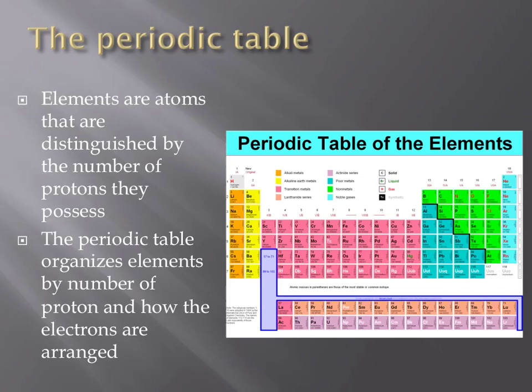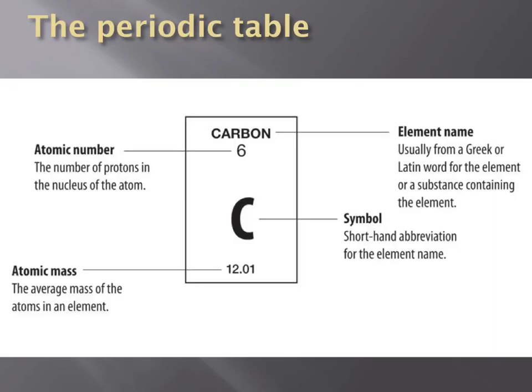The horizontal rows within the periodic table are called periods. When looking at the periodic table, there are three very important pieces of information you need to be able to identify and use. First, each box of the periodic table represents an element. Each element is abbreviated by an element symbol that is one, two, or three letters long.